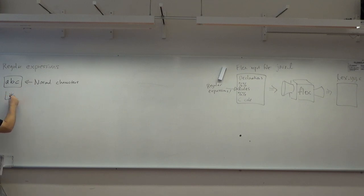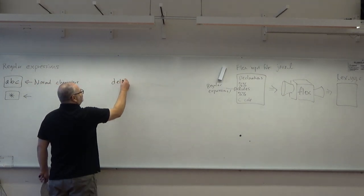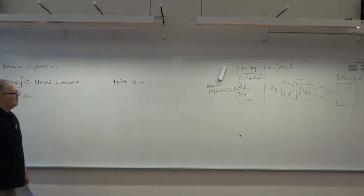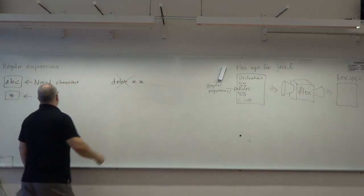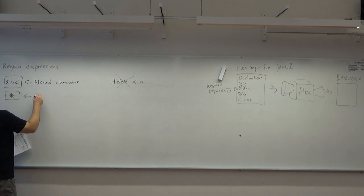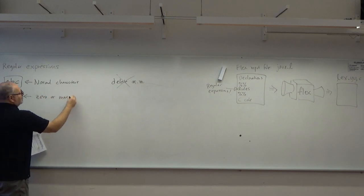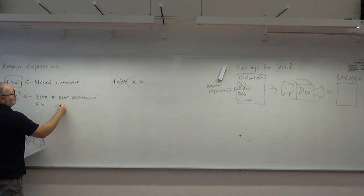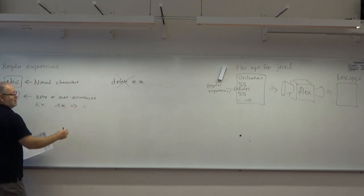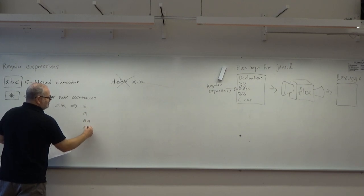You also have the star. It's not like in some shells or the Windows command prompt where star means any sequence of characters — that is not what this star means. This is what is called a Kleene star. What it means is zero or more occurrences of the previous thing. So if I write a*, that can be either empty, it can be one a, two a's, three a's, and so on.